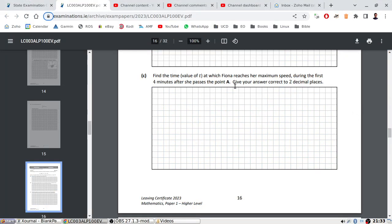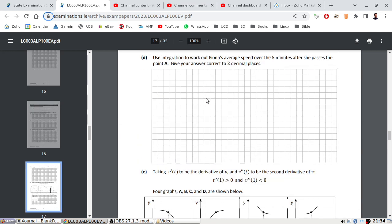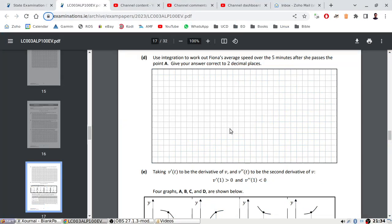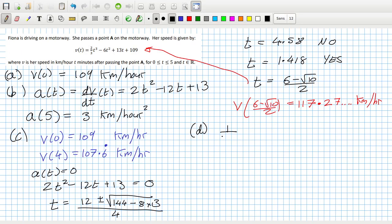Part D: Use integration to work out Fiona's average speed over five minutes after she passes point A. That's a pretty standard question. It's for the first five minutes. So it's 1 over 5 minus 0 integrate from 0 to 5 the speed function, 2/3 t³ - 6t² + 13t + 109 dt.